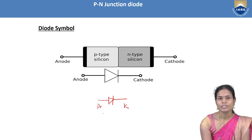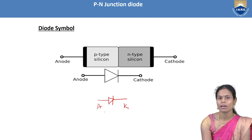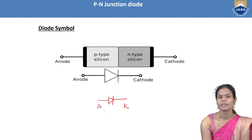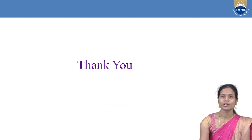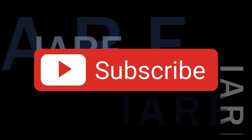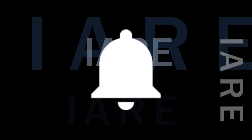The major applications of the PN junction diode are rectifiers, clippers, and clampers. Thank you all — like, share, and subscribe. Hit the bell icon for more updates.